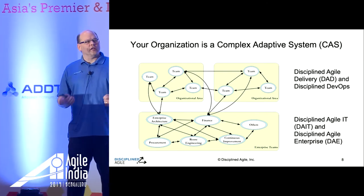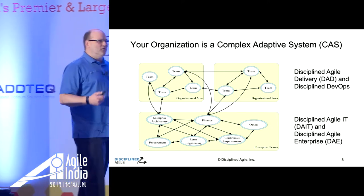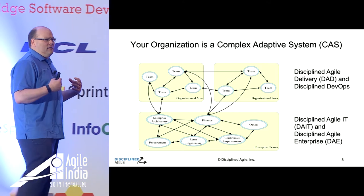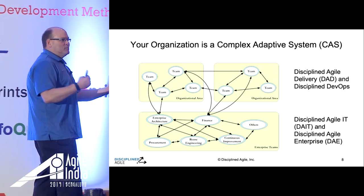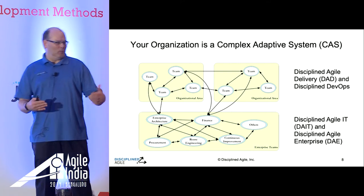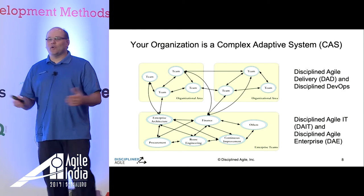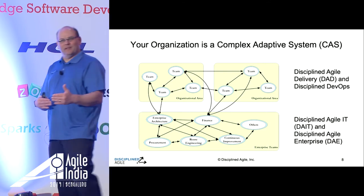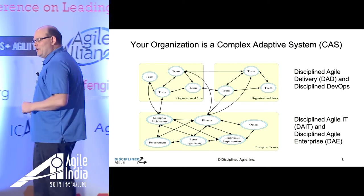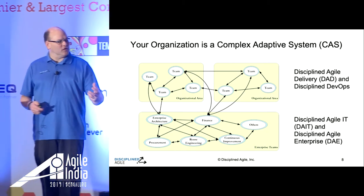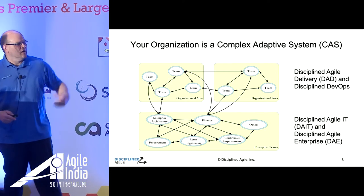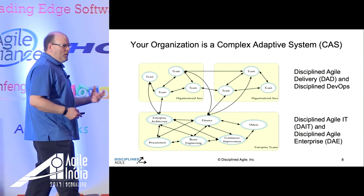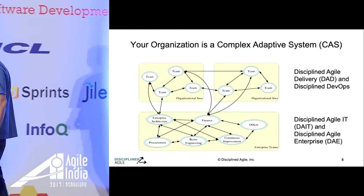This is a very interesting thing in organizations because management will often cringe at the concept of 'what do you mean all these teams will work in different ways?' I would invite you to observe what really happens — even in organizations with a repeatable process and CMMI, teams are still working in completely different ways. They might be faking the process in similar ways, but they're really working in their own ways because they're unique people taking on a unique problem. So let's embrace this, enable it, and help teams be the best they can in the situation they face.